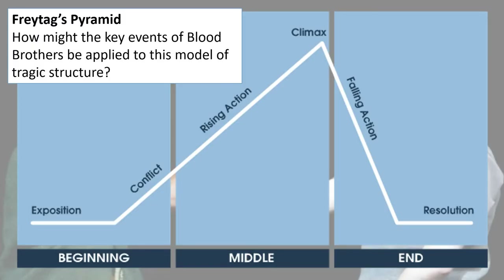Here is a slightly more complex version of Freytag's pyramid, and in this video I'm going to use this model to actually apply the structure of Blood Brothers to the model of tragic structure. If you intend to follow along by making notes, it would be a good idea to pause the video and sketch out this model on a reasonably sized piece of paper. You'll also see some terms on there that may be unfamiliar to you, and as I go through I'm going to give definitions of those key structural terms.